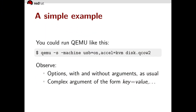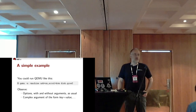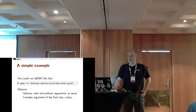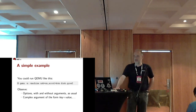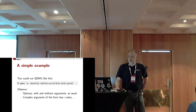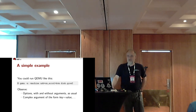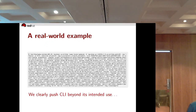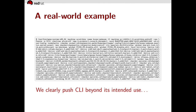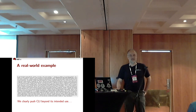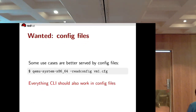Running QEMU can be as simple as this: a couple of options with or without arguments, and there's one complex option which is a comma-separated list of key-value pairs. Simple enough, nothing unusual. But of course we frequently run it like this, and here we clearly push the command line beyond its intended use. Use cases like this one are better served by config files.